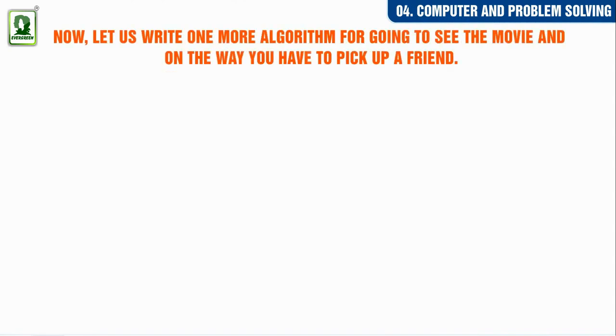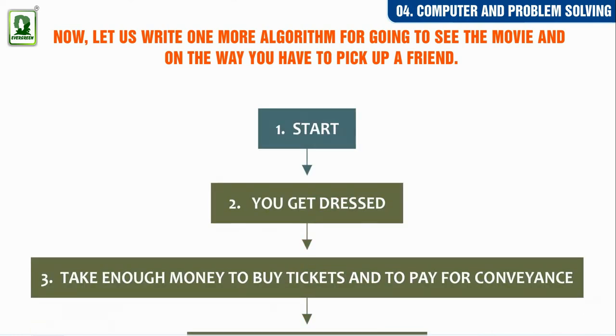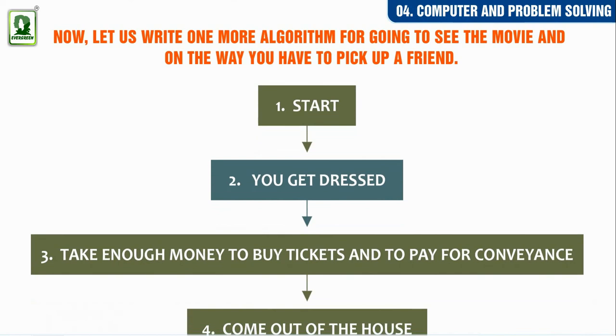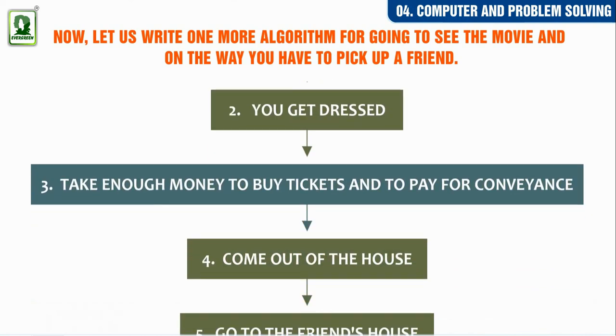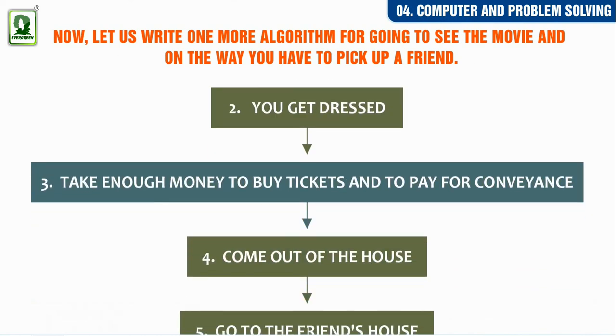Now, let us write one more algorithm for going to see the movie and on the way, you have to pick up a friend. Start. You get dressed. Take enough money to buy tickets and pay for conveyance.